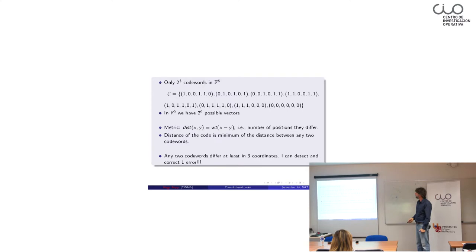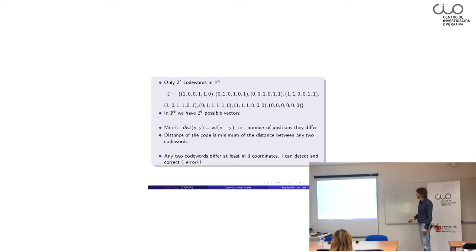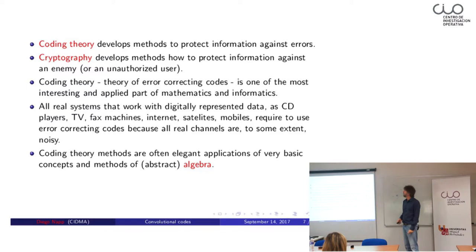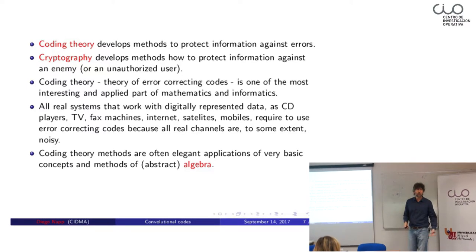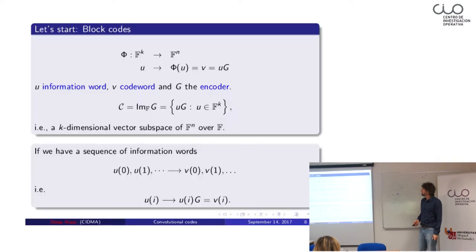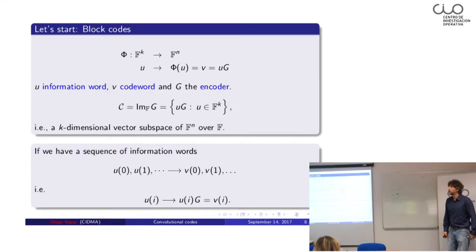Coding theory is used to protect information — distinct from cryptography, which deals with security. Many people confuse the two. Coding theory is everywhere: mobiles, computers, everything you want to store or send requires coding theory. Mathematically, we have a vector space over a finite field — this is our mathematical object — specifically the row span of a constant generator matrix G.